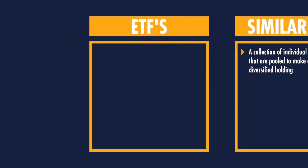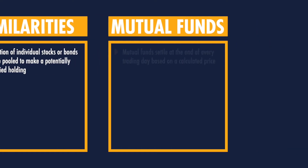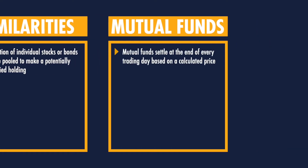Here are the differences. First, ETFs can be traded, like stocks, on an exchange. They are traded every second of every day when the market is open. Mutual funds settle at the end of every trading day based on a calculated price.